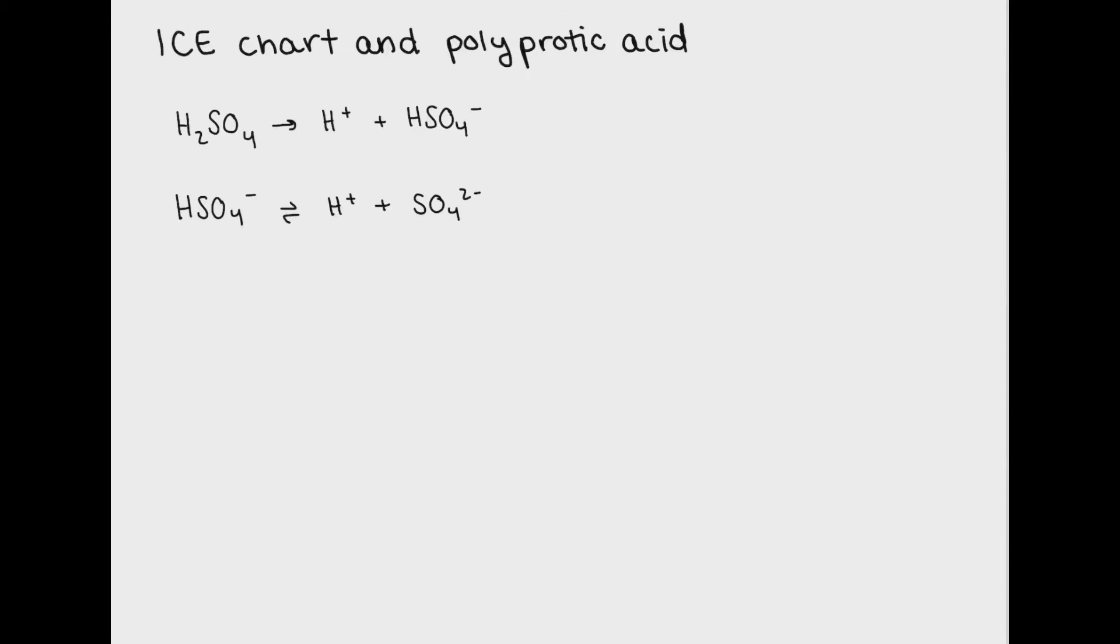Here I'm going to show you how you could go through an ICE chart with a polyprotic acid. First, you need to write out your dissociations of your polyprotic acid. Because there are two dissociations, I'll need two ICE charts.